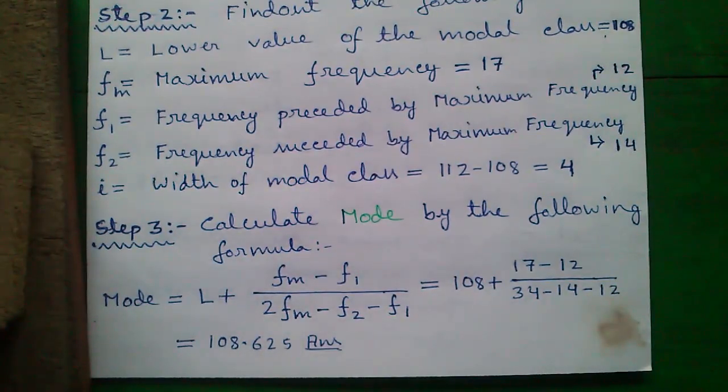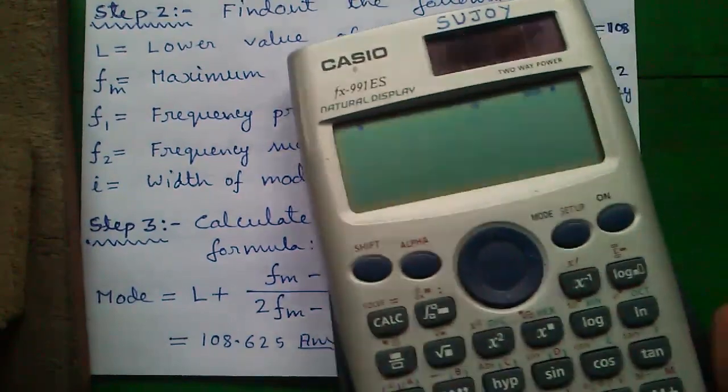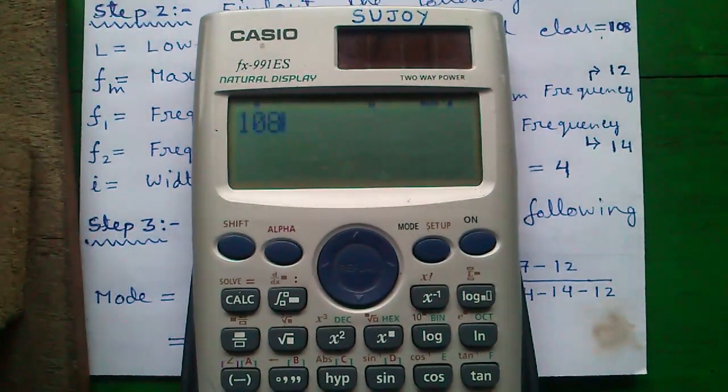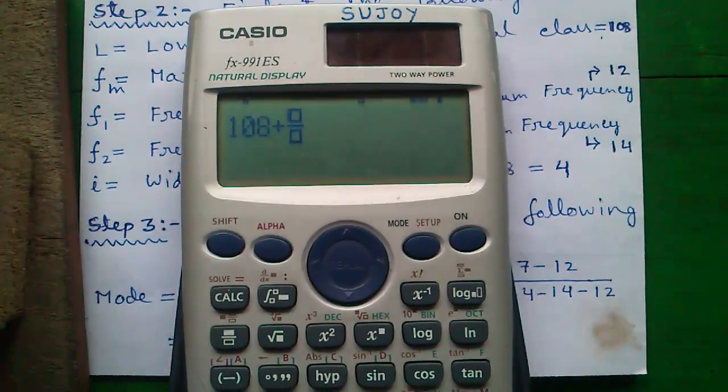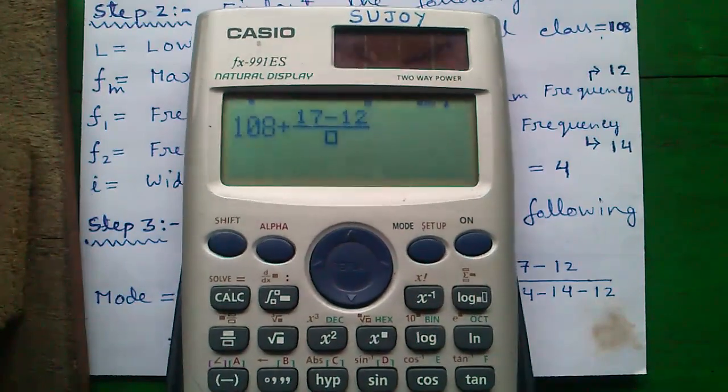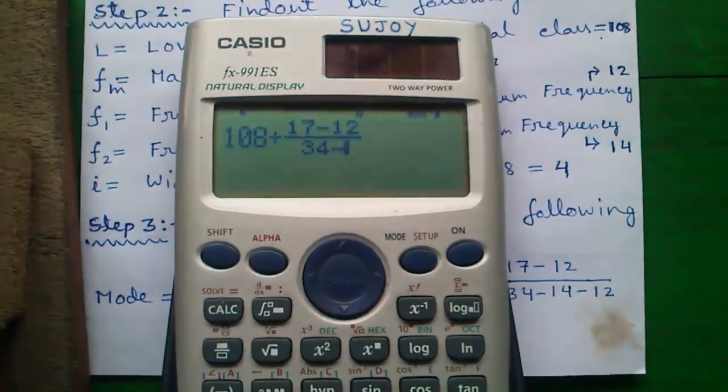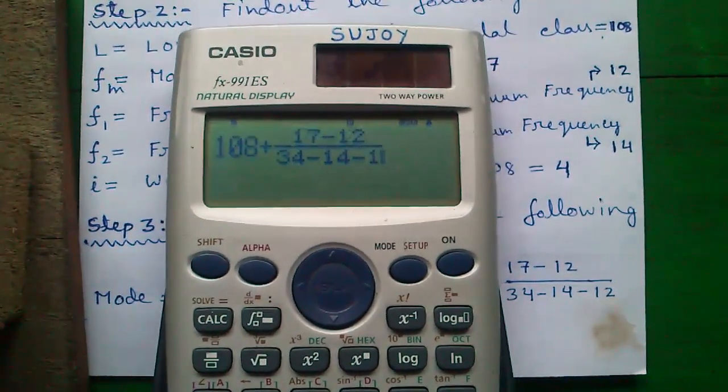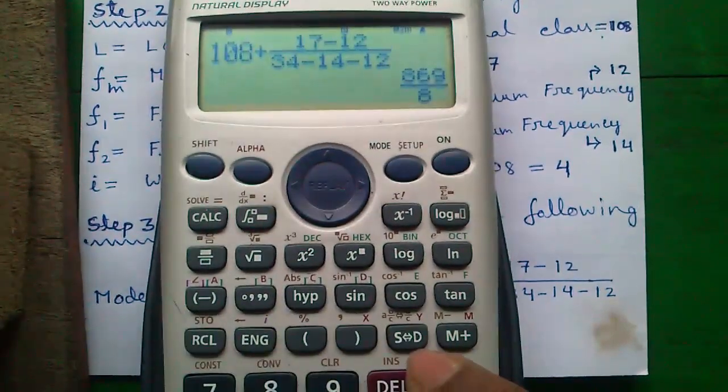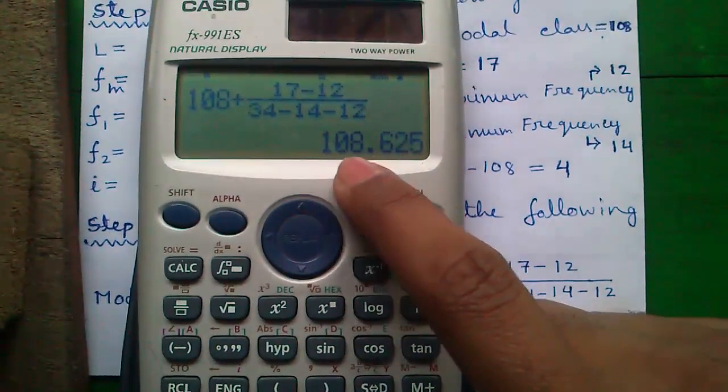Which is 108.625. I will show you: 108 plus, press the fraction button, 17 minus 12 divided by 34 minus 14 minus 12, and press the equals button. Press the S to D button. So you will get 108.625.